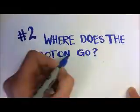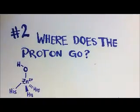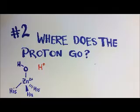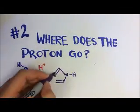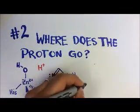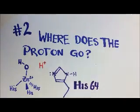So once released, where does this proton go? Well, CA2 actually evolved a shuttle to take a proton from the active site to the exterior of the enzyme. This involves a fourth histidine residue, His-64.